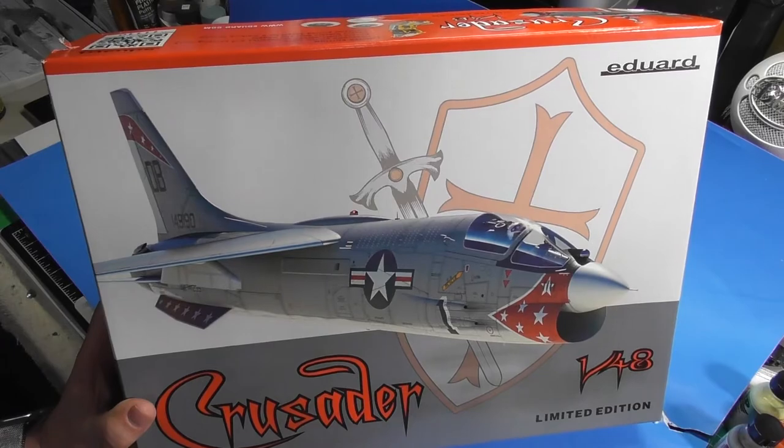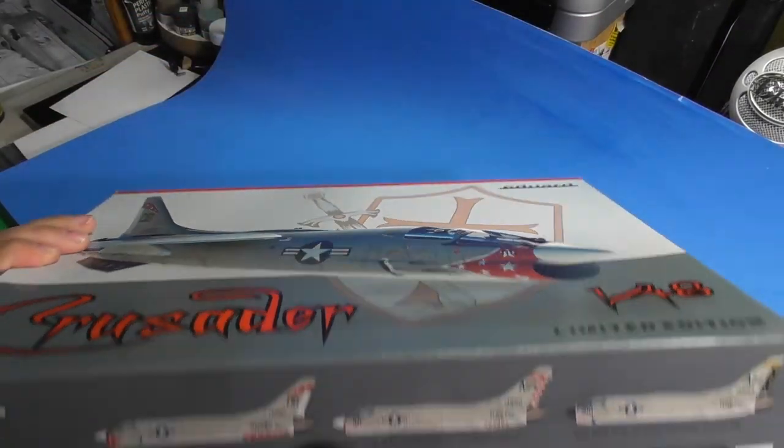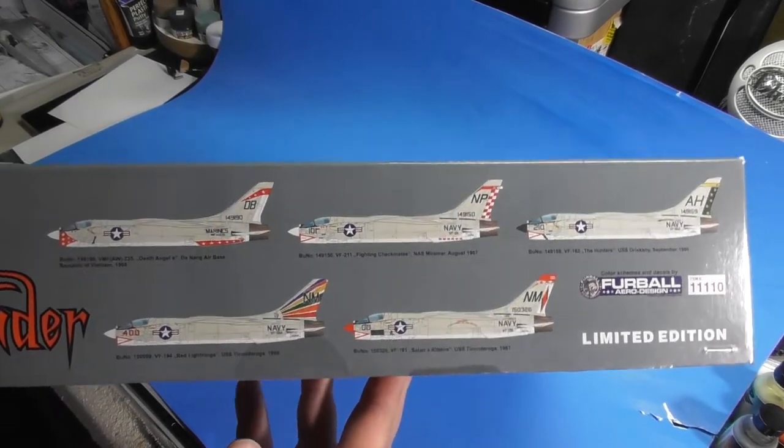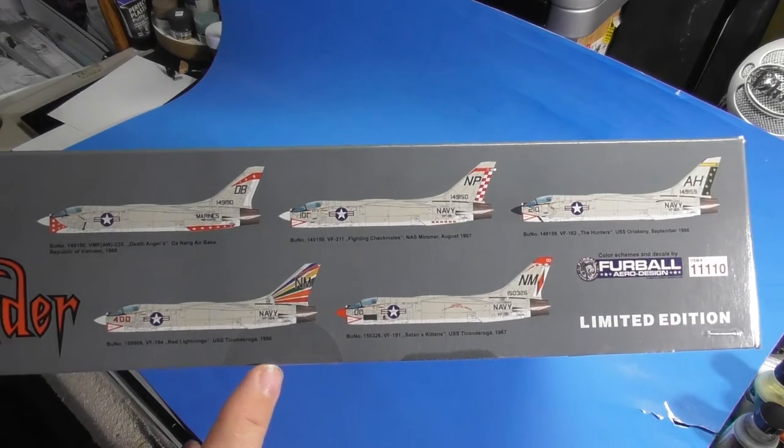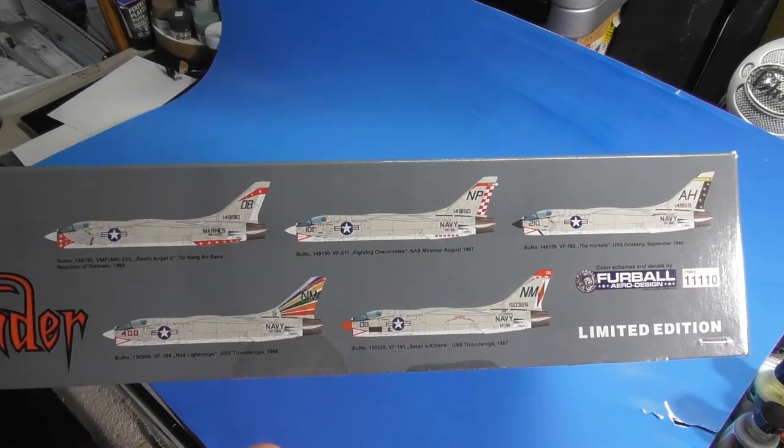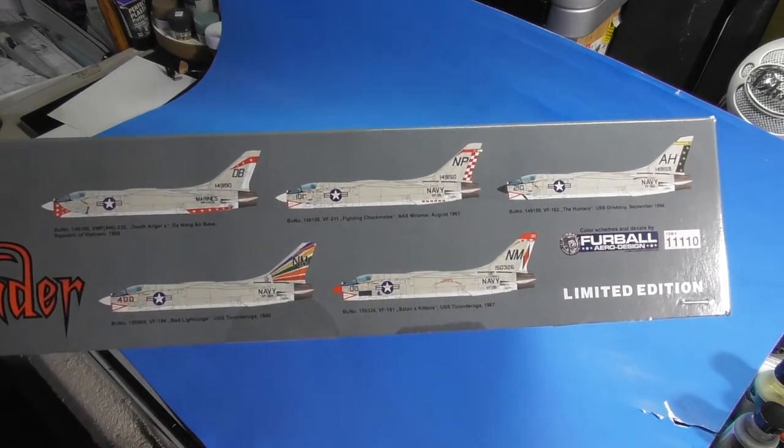Based on Hasegawa plastic, got some resin, got some cartograph decals in it. You can do up to five different schemes. And the beauty of this is you can do five different schemes if you get five Hasegawa kits, you still have these beautiful cartograph decals to make the rest.